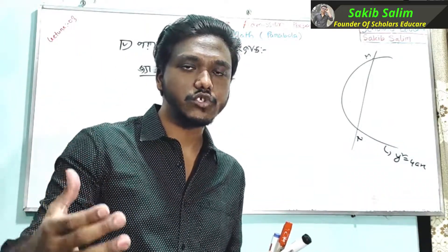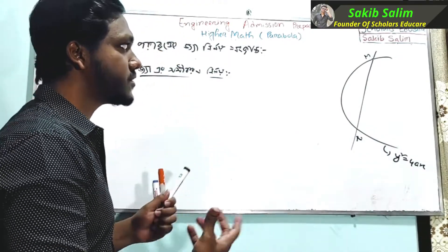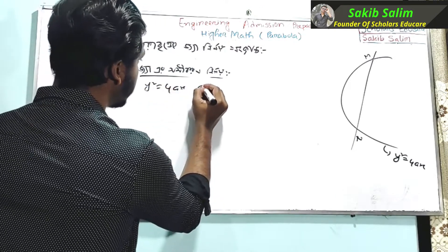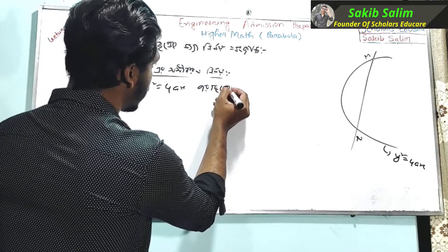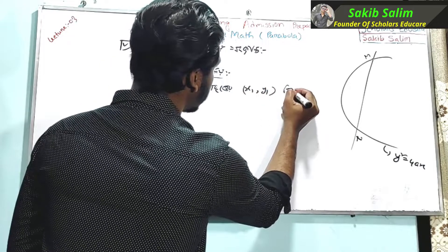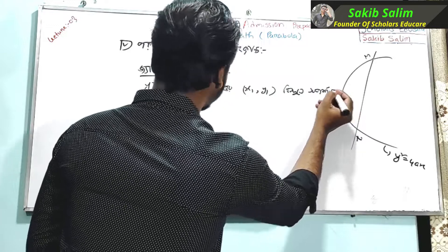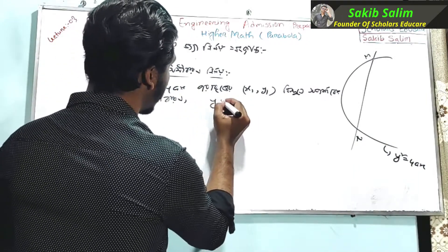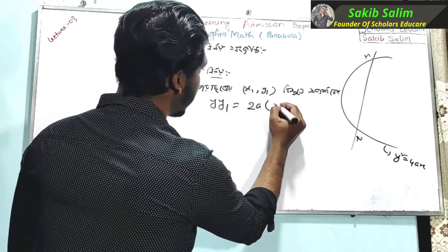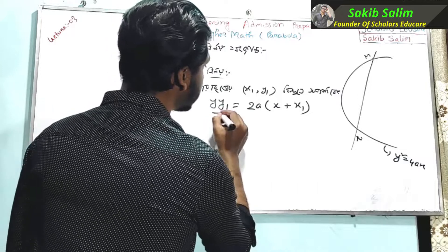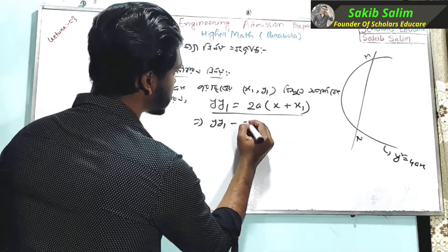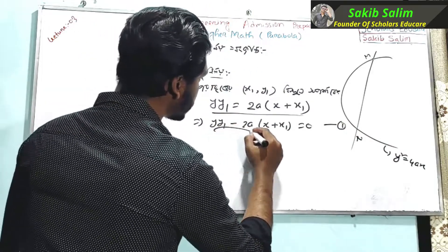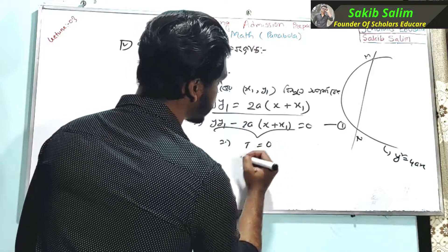The equation of the tangent to y squared equals 4ax at point x1, y1 is: yy1 equals 2a times x plus x1. We can see that yy1 minus 2a times x plus x1 equals 0.